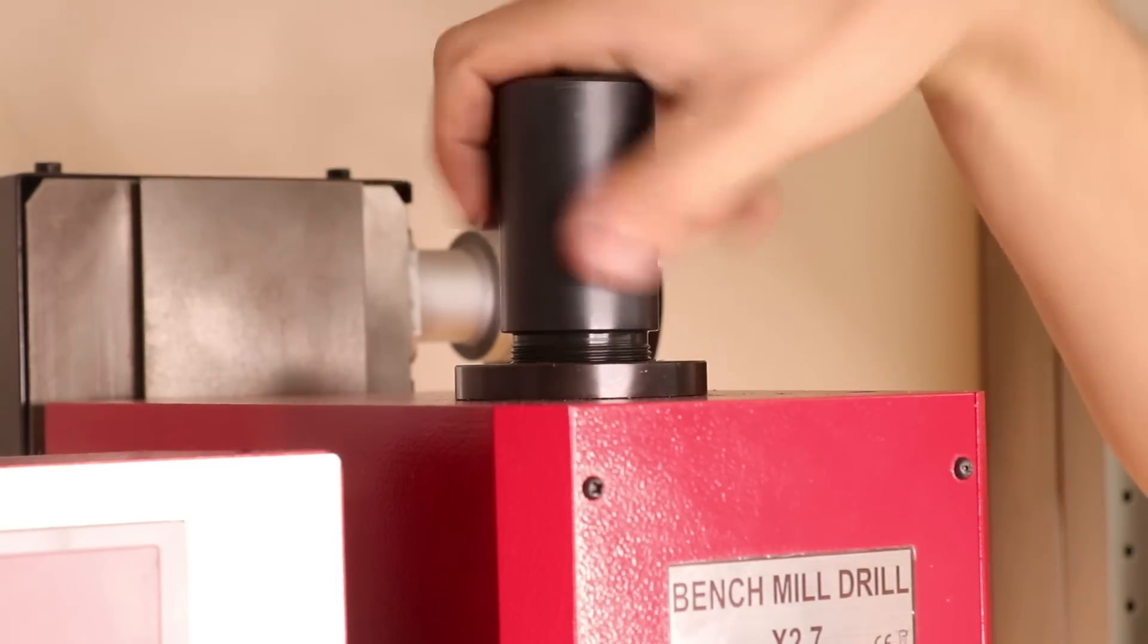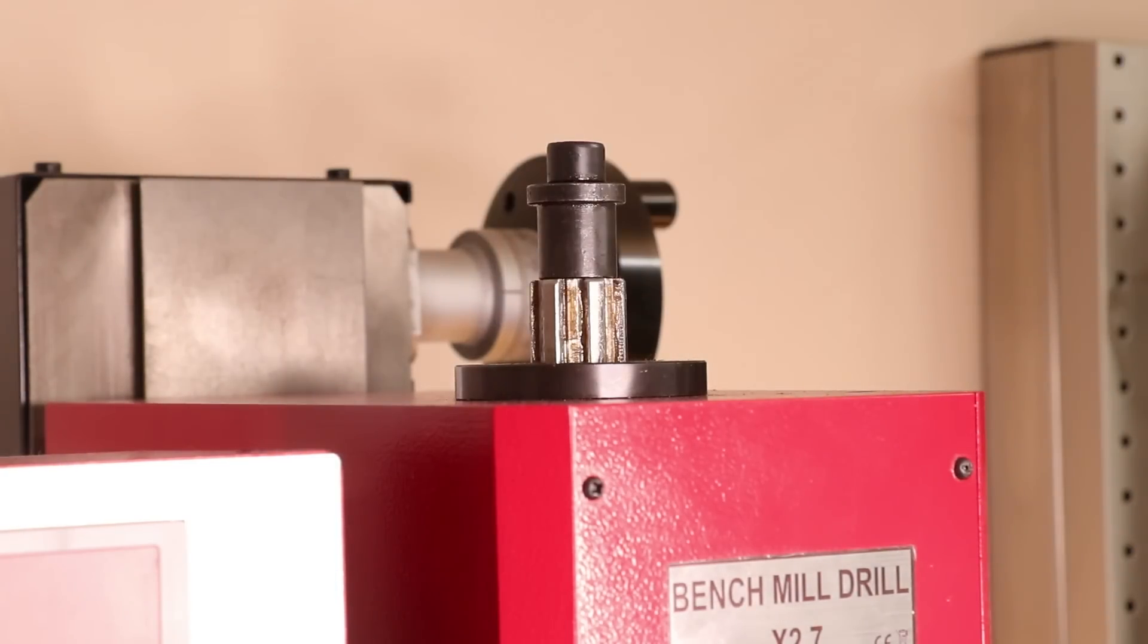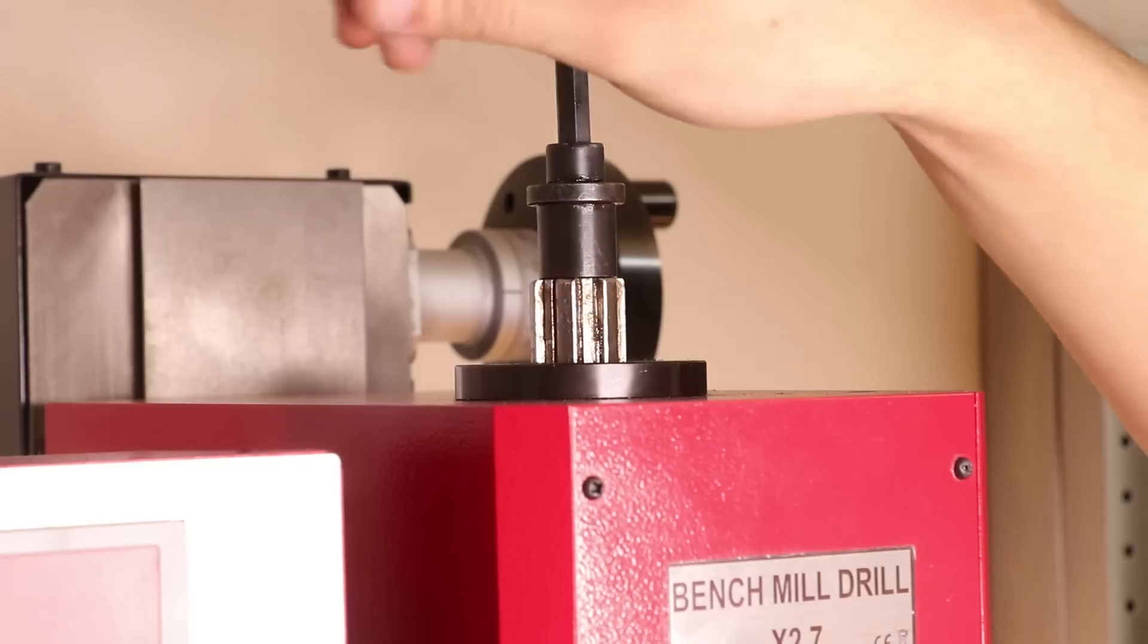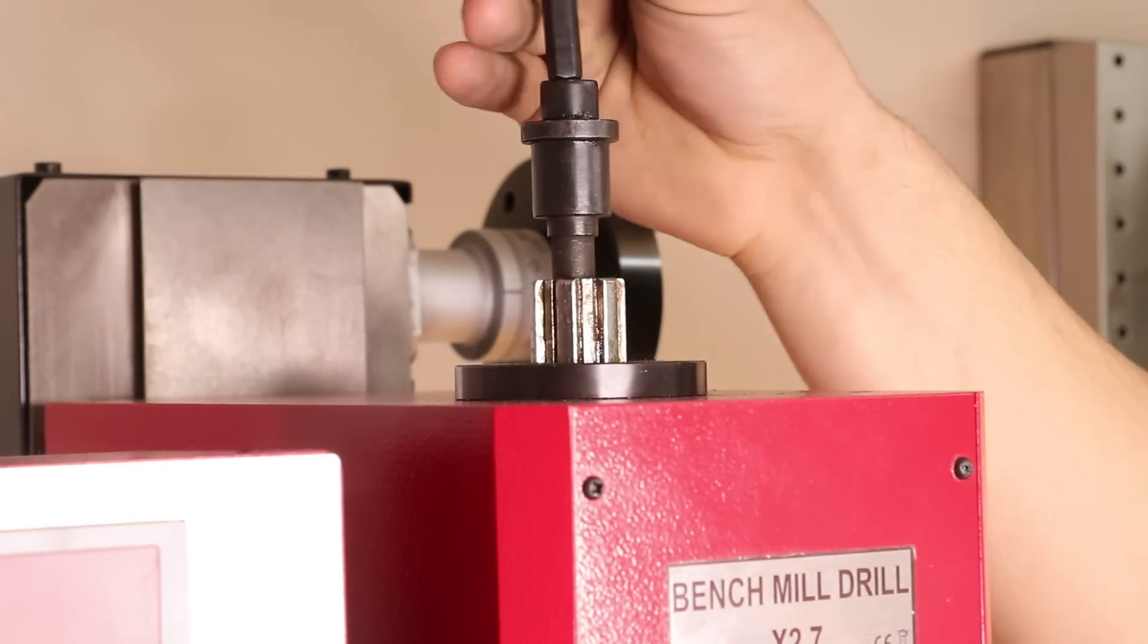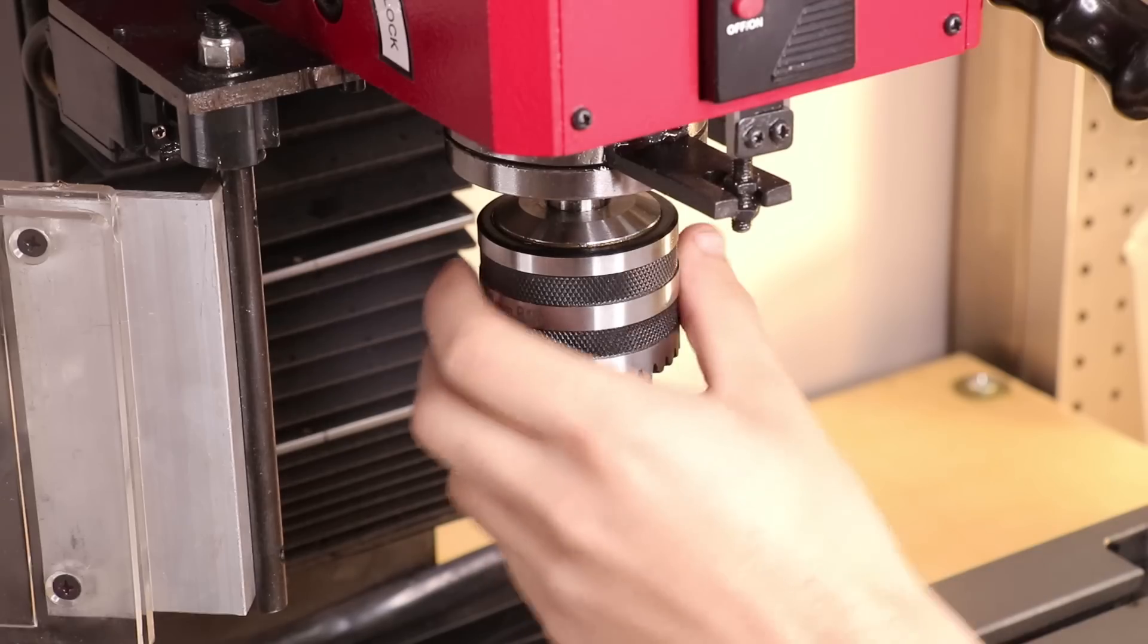So to remove it, we need to remove the drawbar. The drawbar being what distinguishes this from being a glorified drill press. I mean, this is a super accurate and rigid drill press, but it is so much more than that. The drawbar effectively holds the chuck in place.